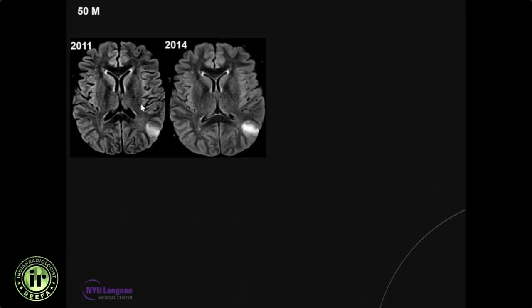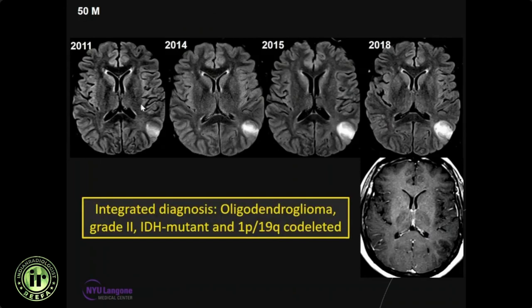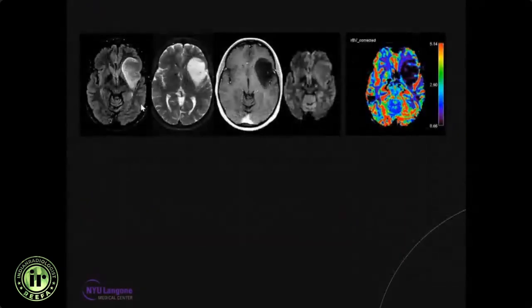Molecular oligodendrogliomas have a median survival of 15 years. Another patient was diagnosed with a non-enhancing tumor in the left precentral gyrus region in 2011, did not undergo any therapy — just observation. The tumor very slowly and progressively increased in size, and even in 2018, despite increasing in size, there is no contrast enhancement. The patient then underwent resection; tissue came back as oligodendroglioma, grade 2, IDH mutated, and 1p19q co-deleted. These are tumors that progress rather slowly and have a longer median survival compared to IDH wild-type gliomas.